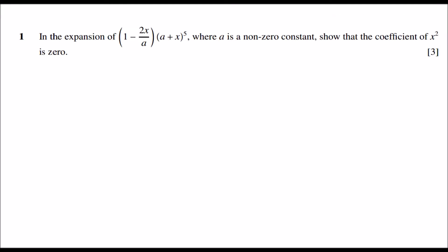Welcome. We need to show that the coefficient of x squared is zero in the expansion of the given term. We will start off by finding the terms in x squared. x squared is simply 1 times x squared and x times x.